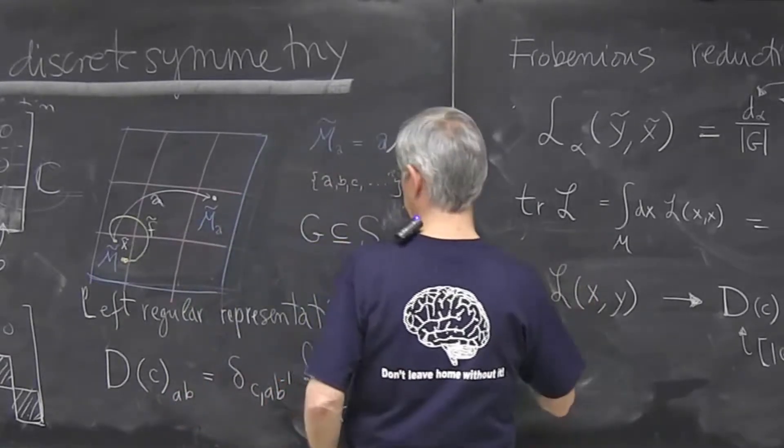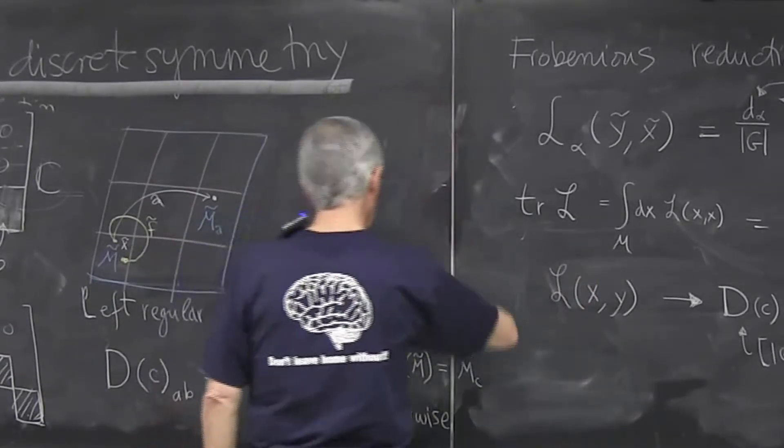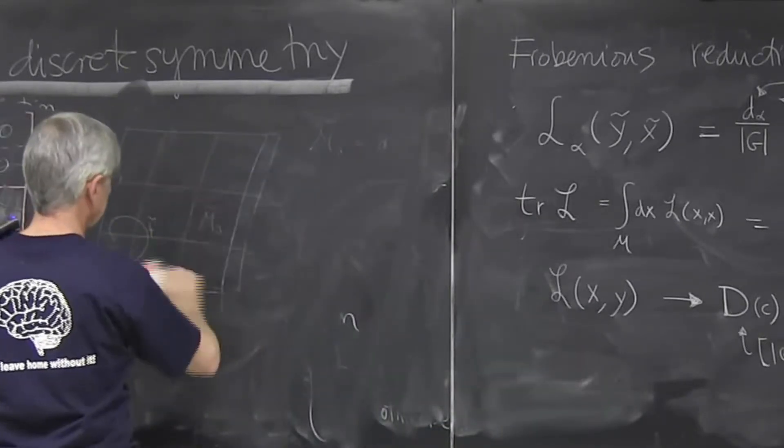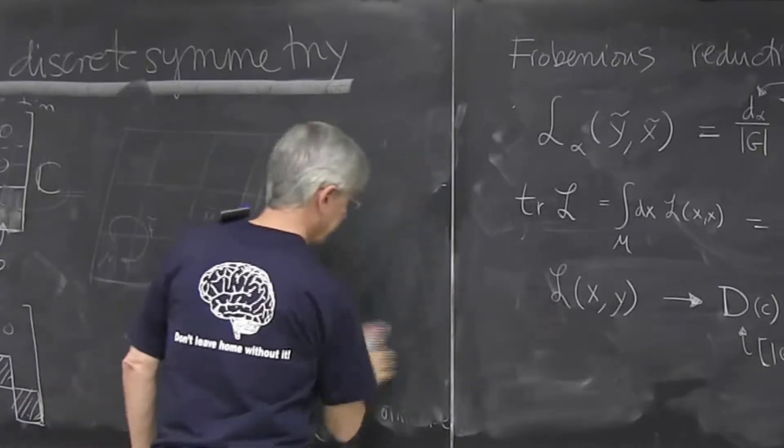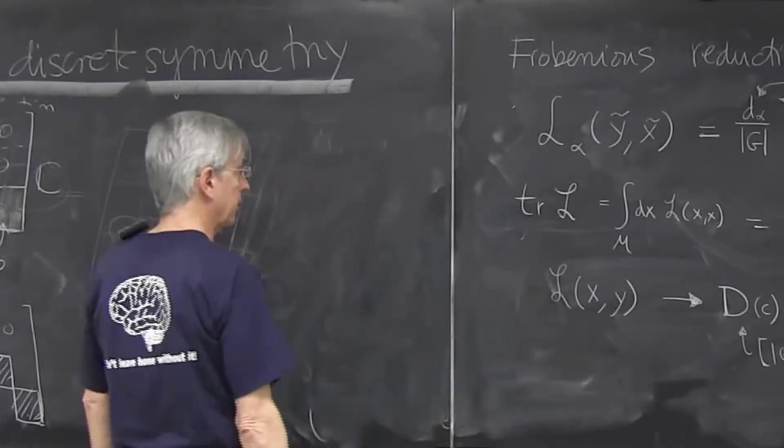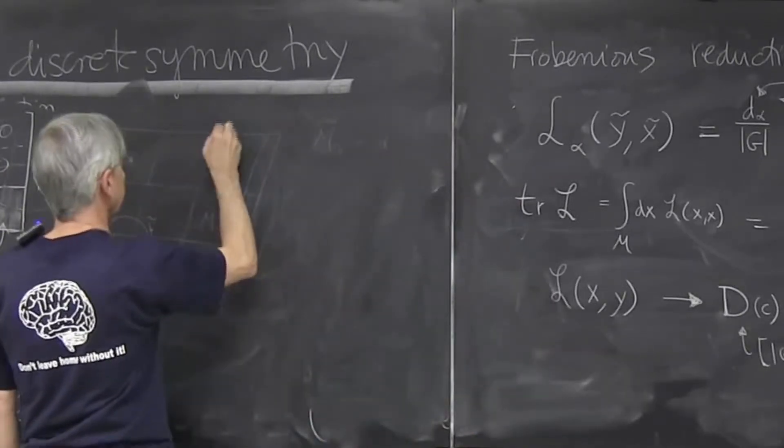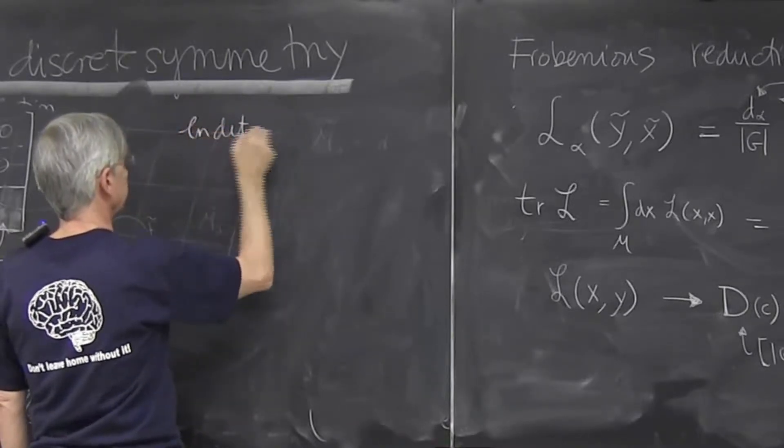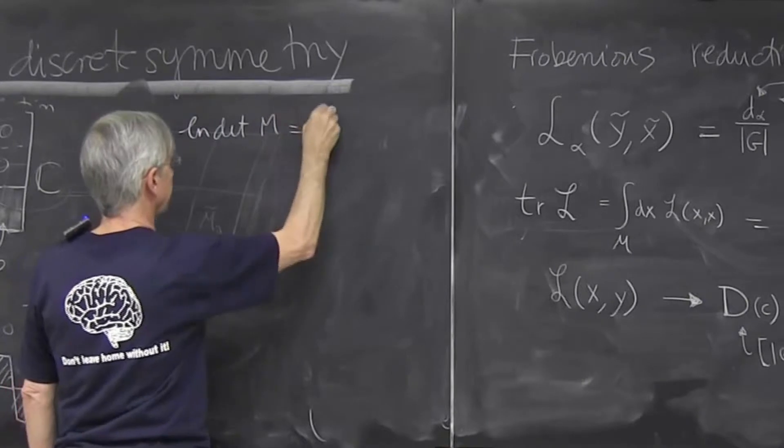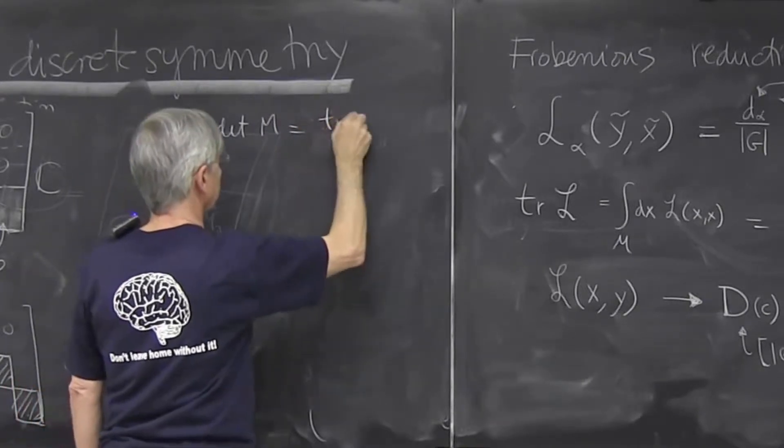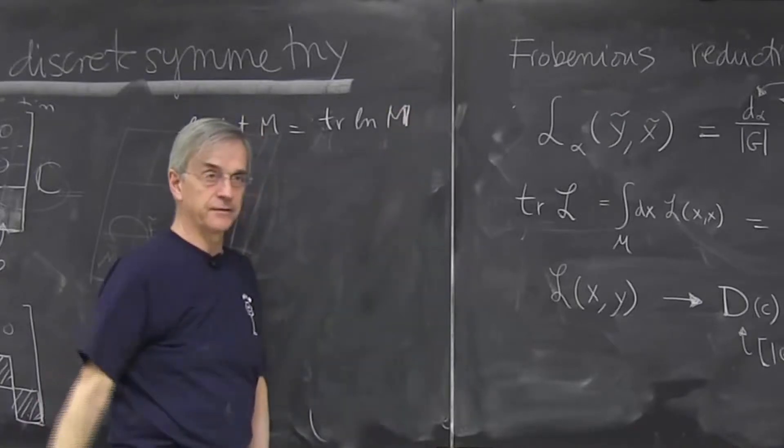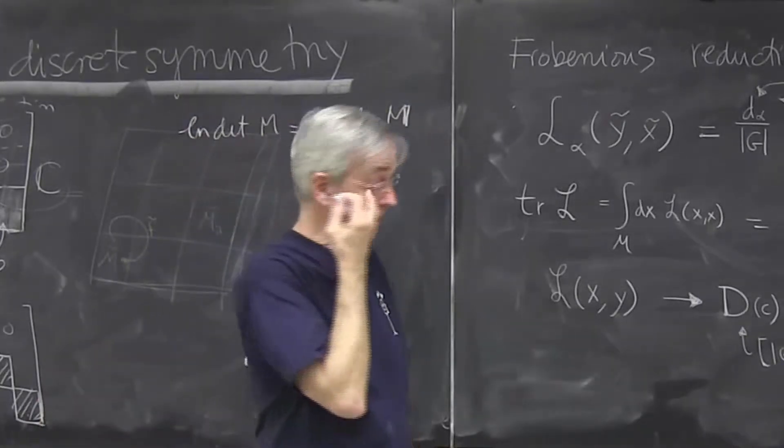Now we have a trace formula. It says the trace formula is a sum over traces over the irreducible representations. And when we go from—remember, determinant, log of determinant of any matrix was a trace of the logarithm of the matrix. This is just identity for any matrix and certainly for finite matrices.